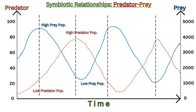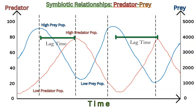A low predator population allows the prey to reproduce without being consumed, increasing exponentially across generations up to the carrying capacity. As the prey population increases, the predator population also increases concurrently, as a plentiful food source is available. Then you have a crossover effect where the predator population continues to increase, but as there are more predators, the natural response is a declining prey population. A lag time exists within this resurgence of the predator population.